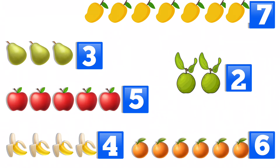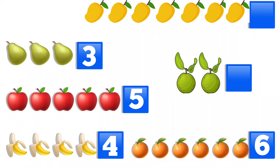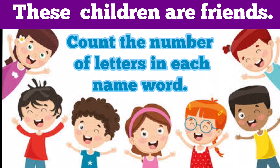Now see and tell which fruit occurs in the minimum number. It is guava — it is only two in number. Tell me, children, which fruit counts six in number? It is orange. See how simple it is to gather information using pictorial symbols.